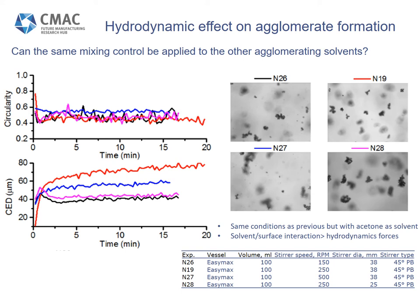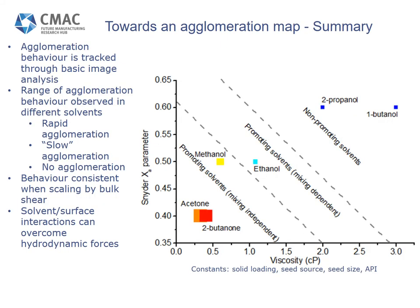It should also be highlighted that the same bulk shear rate still produces the same responses, as experiments N26 and N28 produce the same response in terms of particle size. To wrap up this work around agglomeration behaviour, we've demonstrated that we can track agglomeration through a relatively simple image processing technique and have identified three different agglomerating behaviours: solvents where agglomeration is rapid and not affected by hydrodynamics, such as acetone; solvents where agglomeration is slower but we can disrupt it with mixing conditions, such as ethanol; and solvents where agglomeration doesn't occur, such as 2-propanol.